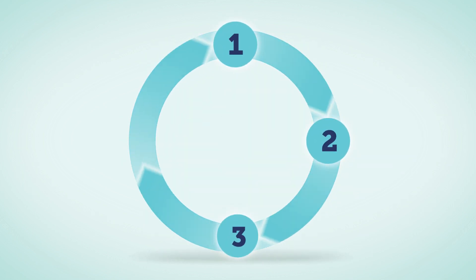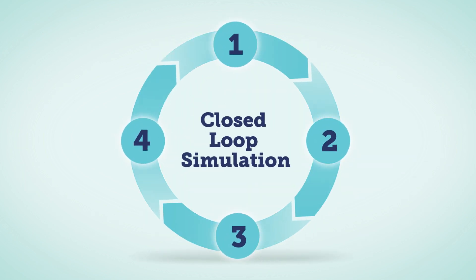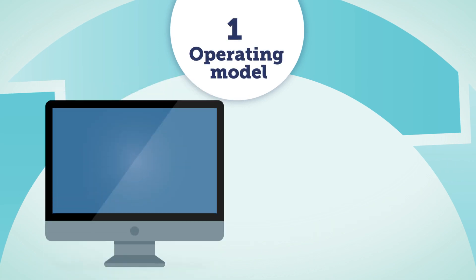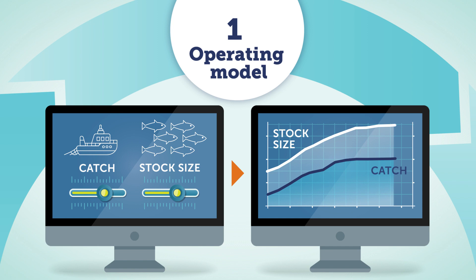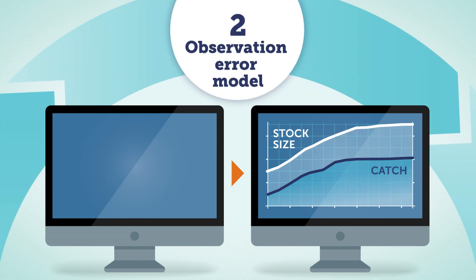MSE simulations follow a closed feedback loop. First, the operating model, which represents fishery and population dynamics, generates simulated data. Next, the data are passed into what's known as an observation error model, which adds plausible levels of imprecision,